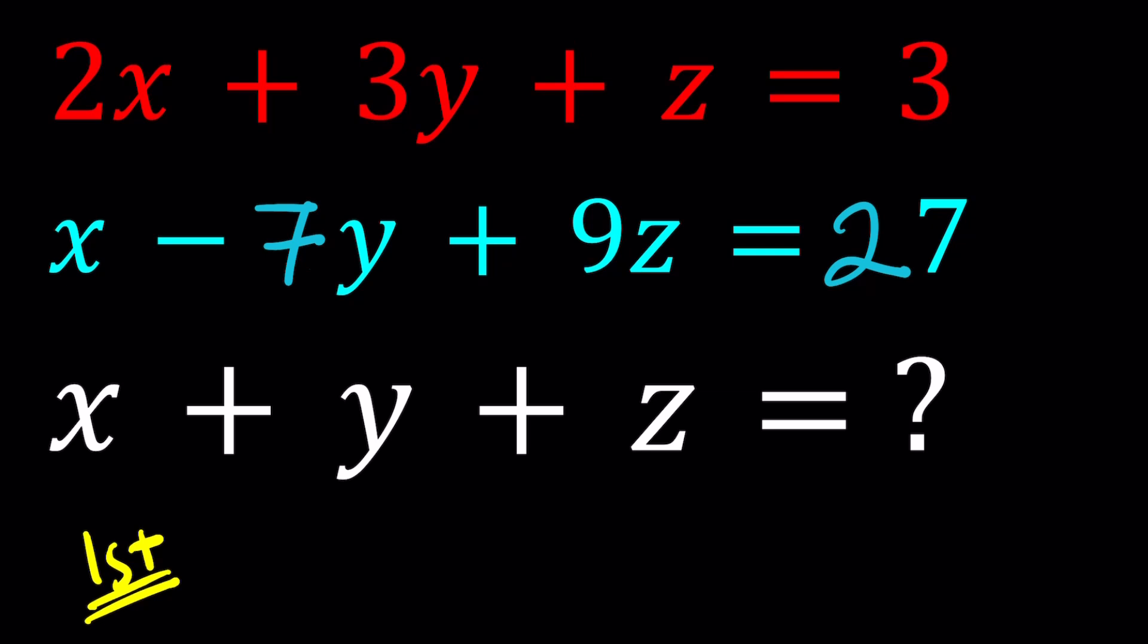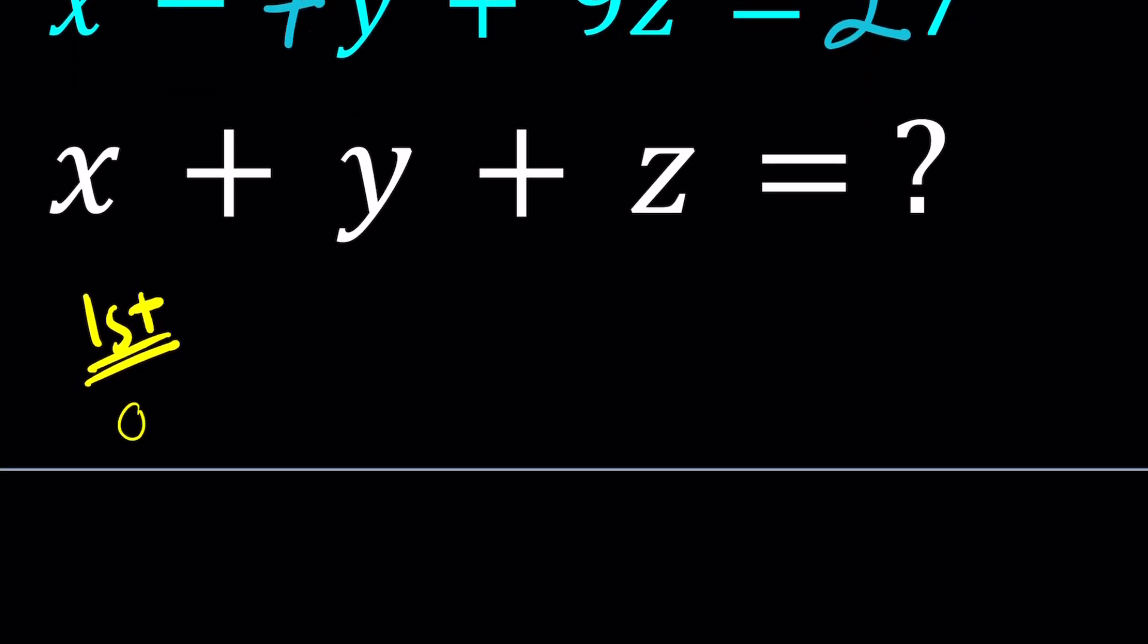So here's what I'd like to do then. Take the first equation, multiply by a. And take the second equation and multiply by b. I'm hoping to get x plus y plus z from here.